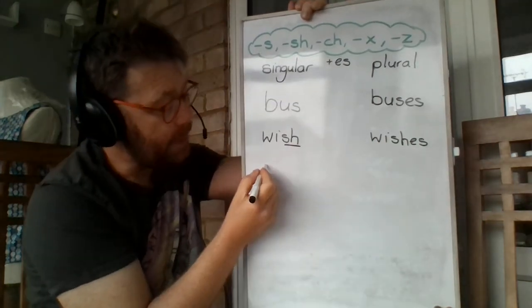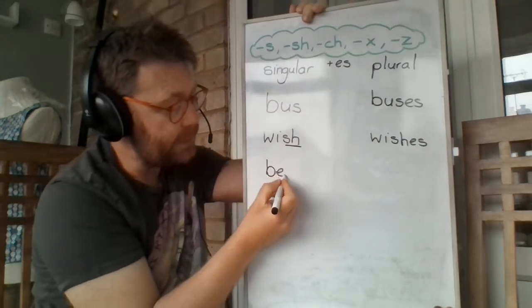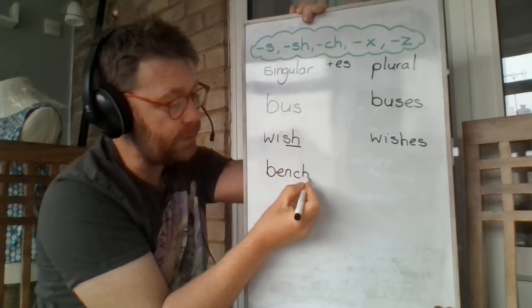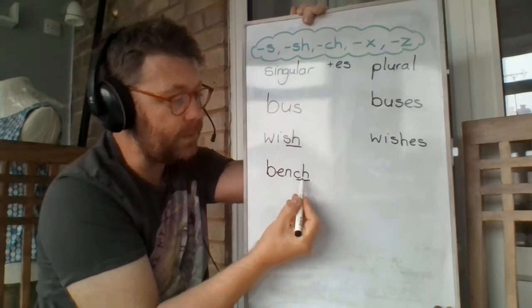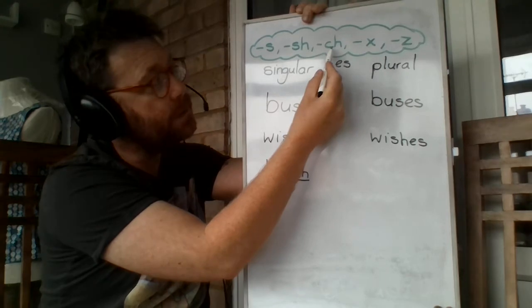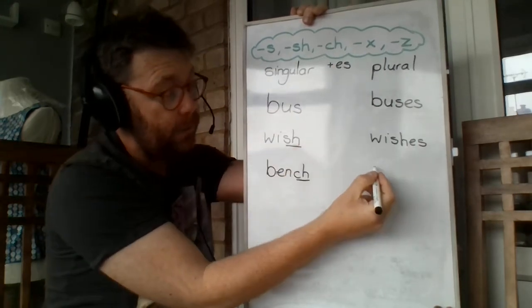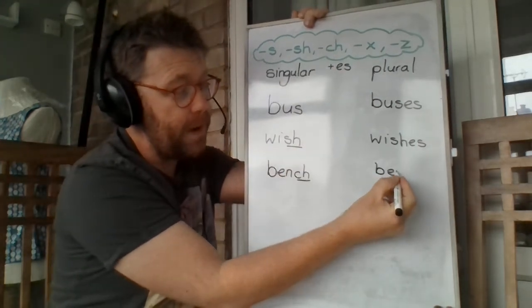Next word, bench. I like to sit on a bench. But look, it ends with CH, which is one of our sounds up here in our cloud. So we have to add ES. Well, I like to sit on lots of benches.